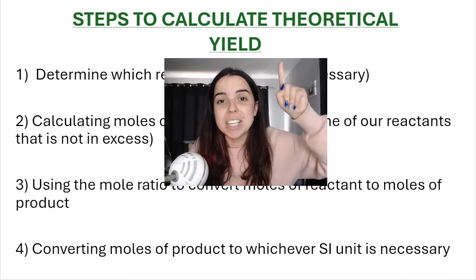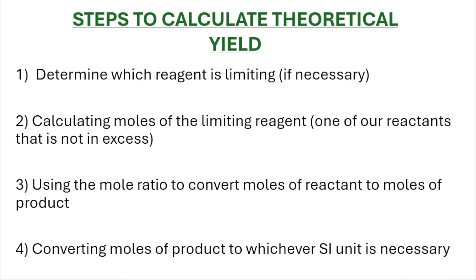Here are the steps to calculate theoretical yield. First, determine which reagent or reactant is limiting, if necessary. In grade 10 they will tell you which one is in excess, so you'll know which one is limiting. In grade 11 and 12, you often need to determine this yourself. The limiting reagent is very important because in step two we calculate the moles of the limiting reagent. Then we use the mole ratio to go from reactant moles to product moles. Finally, we convert the moles of the product to whichever unit is required.